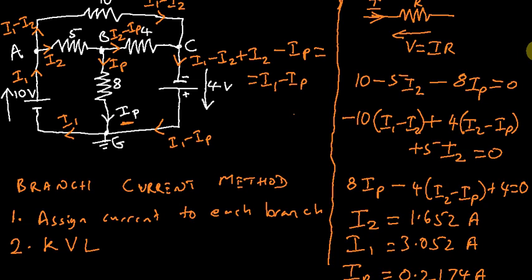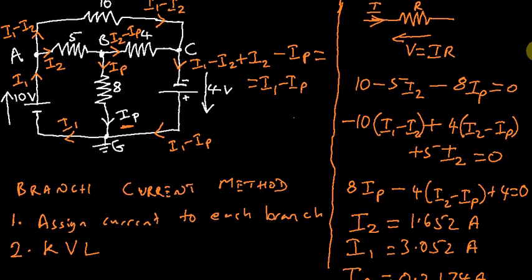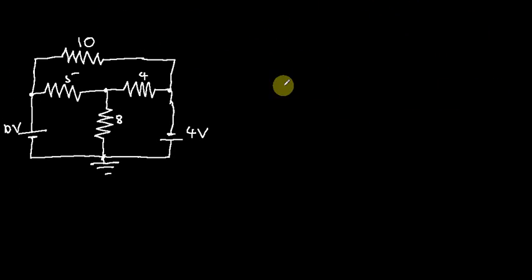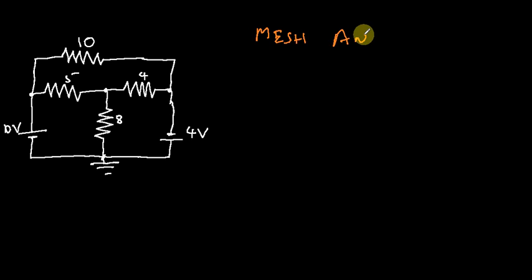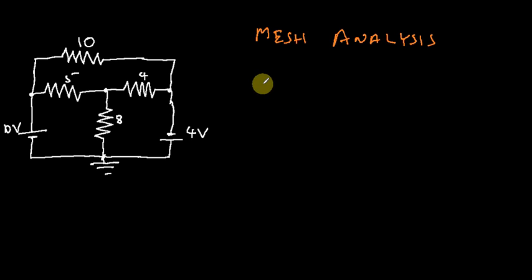The second method we're going to use to solve this same question is the mesh analysis method. Basically this method has two steps, and it is quite similar to the branch current method but distinct in its own right.